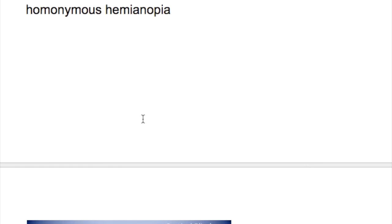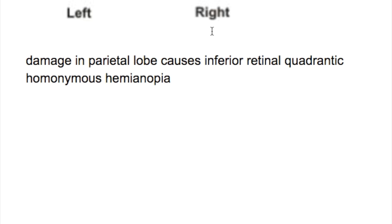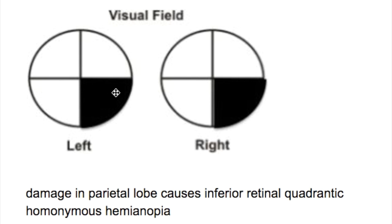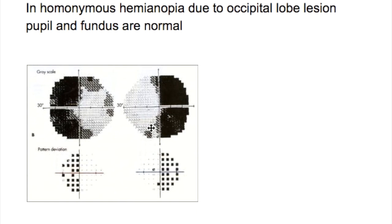Damage in the parietal lobe causes inferior retinal quadrant homonymous hemianopia. The left occipital lobe lesion causes right homonymous hemianopia. With homonymous hemianopia due to occipital lobe lesions, the pupil and fundus are normal.